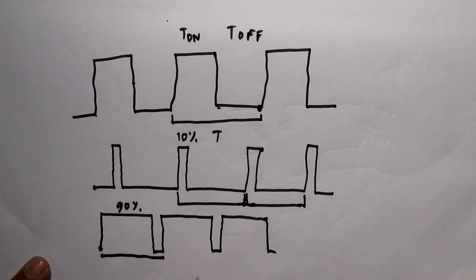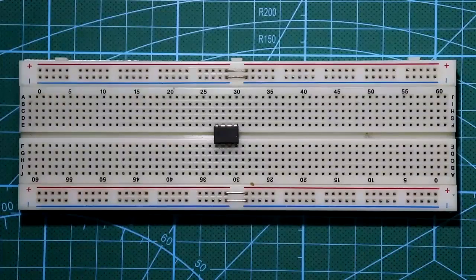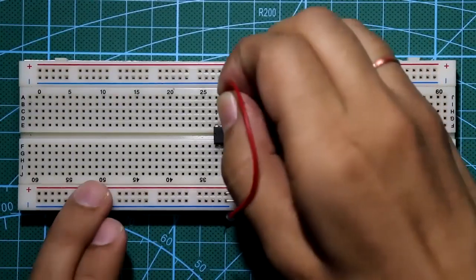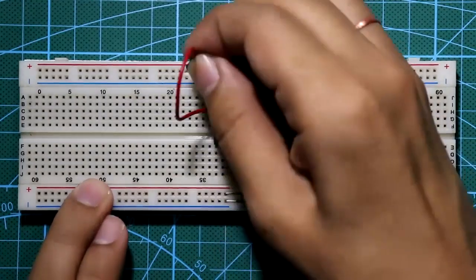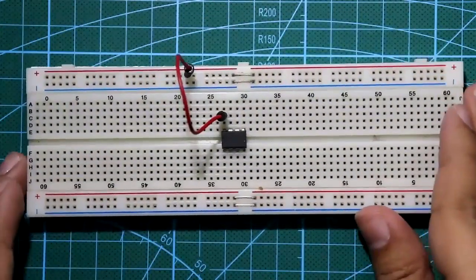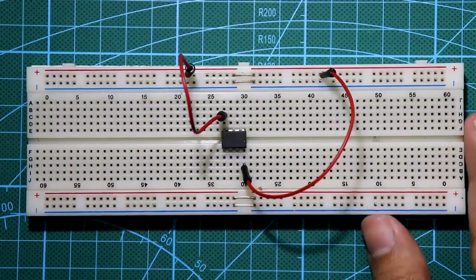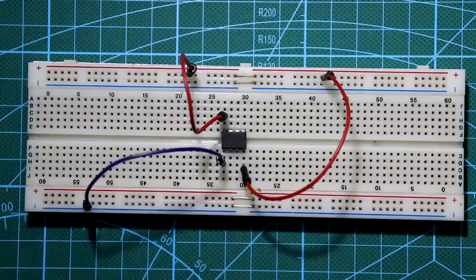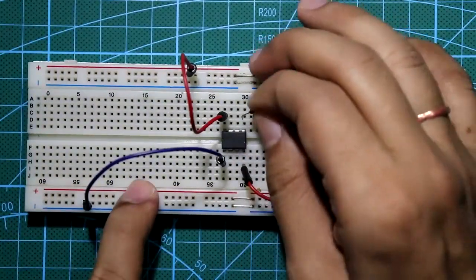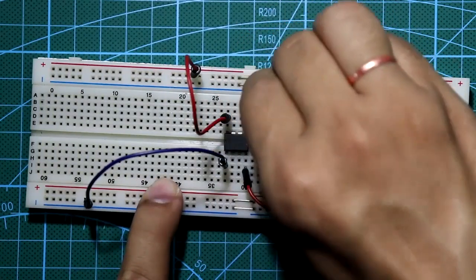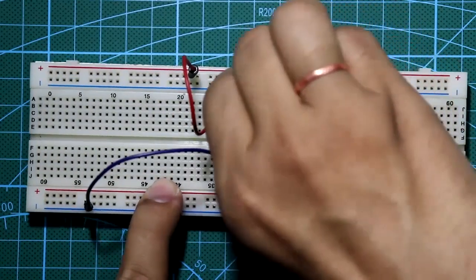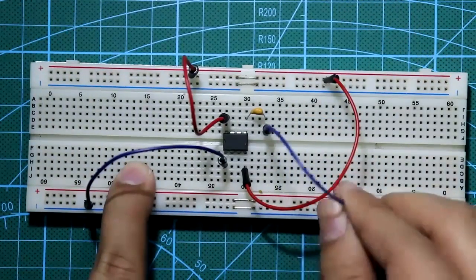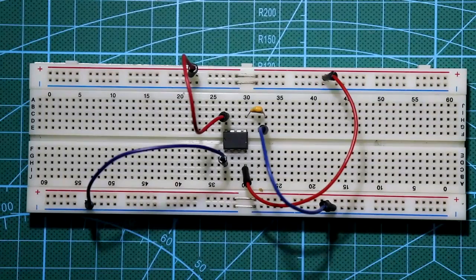Now see the connections: pin number 8 goes to plus VCC, pin 4 is connected to plus VCC, pin number 1 is connected to GND, and pin number 5 is connected with a 0.01 microfarad capacitor to GND. These are the common connections.